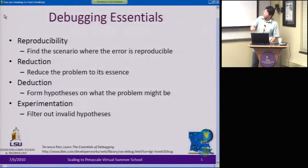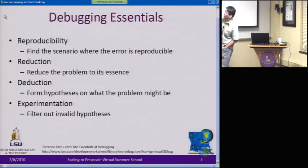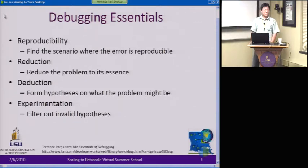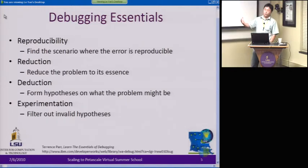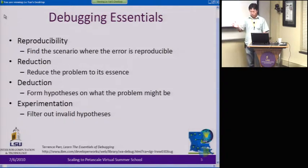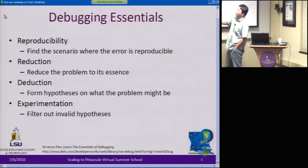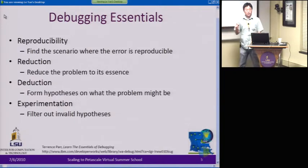Here are the debugging essentials — there's an article on the essentials of debugging. This is a summarization of what you do when you debug a program. Your program either crashes, hangs, or just doesn't do what it's supposed to do. That's when you think you have a bug. The first step is to reproduce the problem.